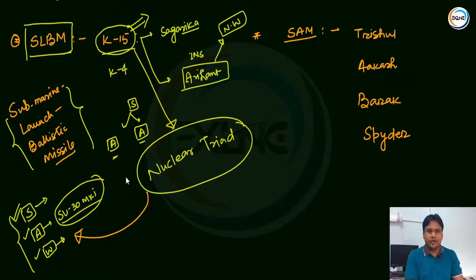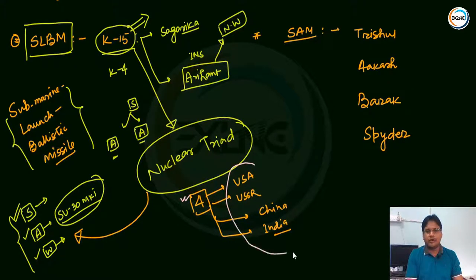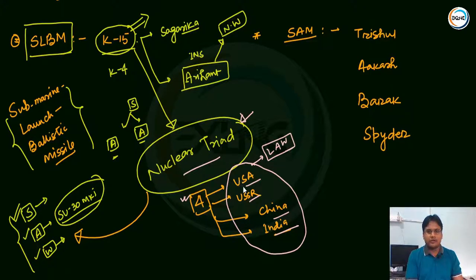Across the globe, only 4 countries have nuclear triad capability: USA, USSR (Russia), China, and India. Remember: MIRV capability belongs to 7 countries, ballistic shield to 4 countries (USA, Russia, Israel, India), and nuclear triad also to 4 countries (USA, Russia, China, India). Do not confuse these lists - they are different groupings and all are important exam topics.